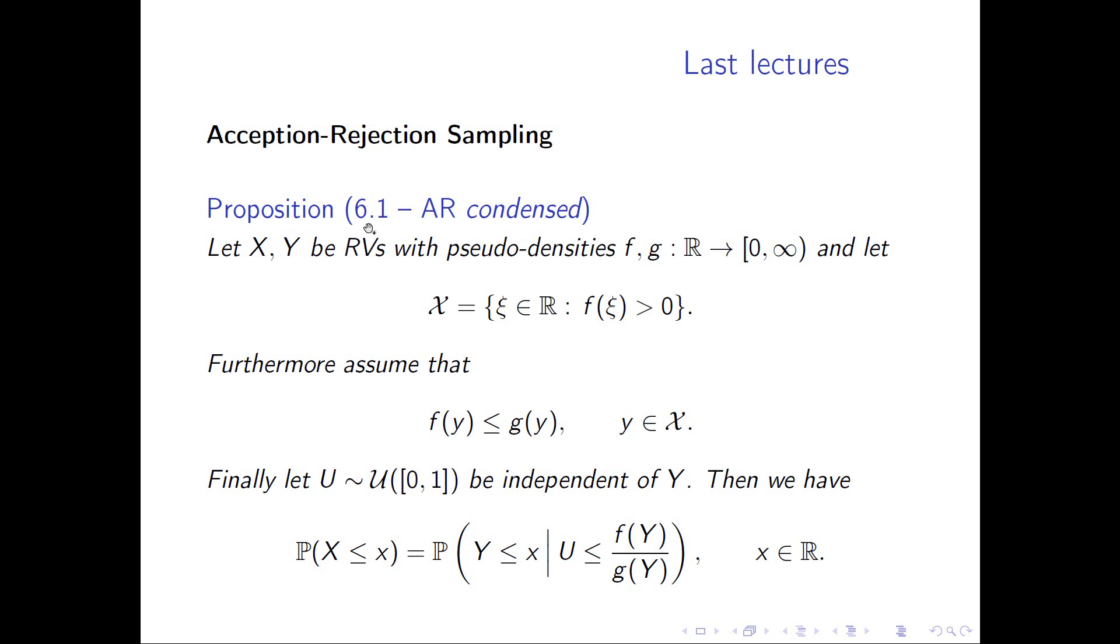You can do this by going through all the steps from last time, but you can also start by writing down what this conditional probability means here with the densities we have. We have the density of U, we have the density of Y, they are independent, and then you can start to compute.